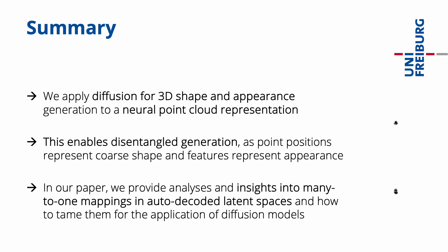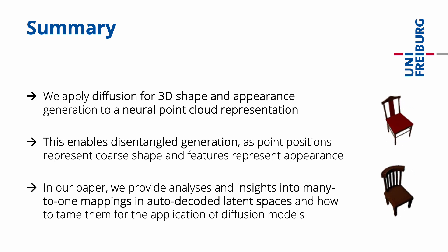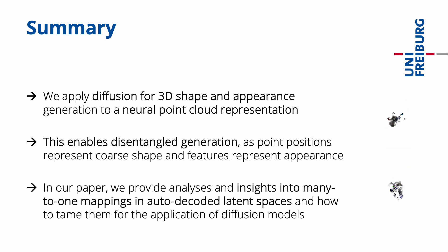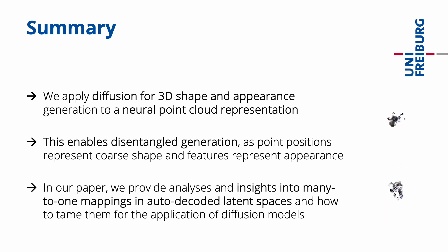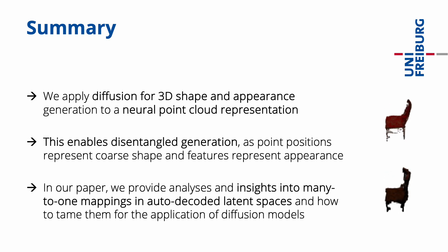To summarize, we apply diffusion for 3D shape and appearance generation to a neural point cloud representation. This enables disentangled generation, as point positions represent the coarse shape and features represent the appearance of the object. In our paper, we provide extended analyses and insights into many-to-one mappings in auto-decoded latent spaces, and how to tame them for the application of diffusion models.